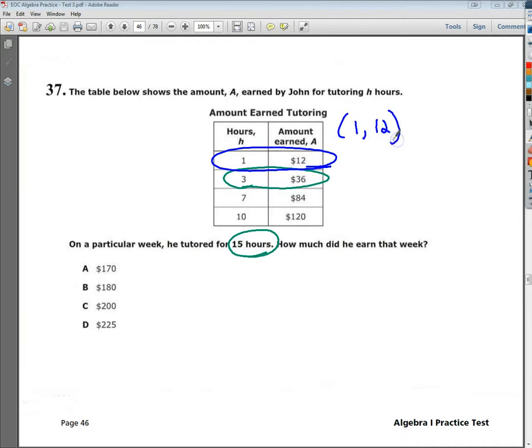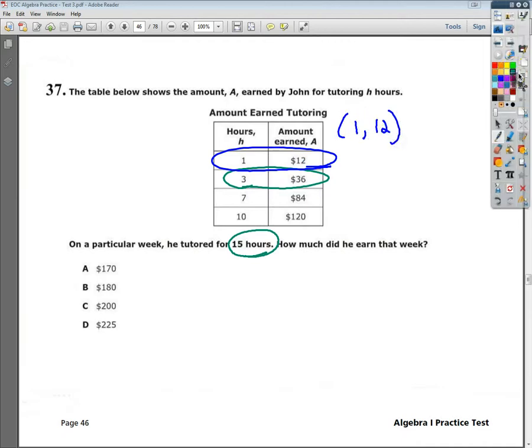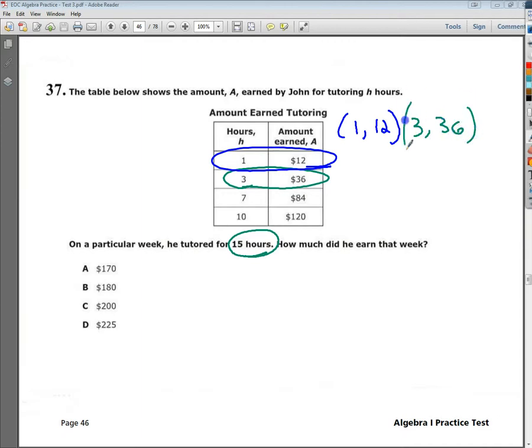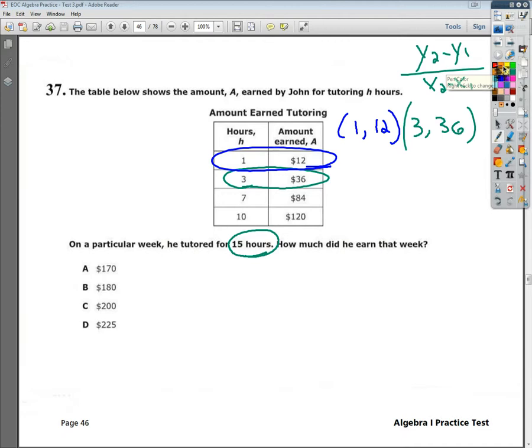If you had 1, 12, and then you had your other point of 3, 36, you can kind of figure out what your slope is. You know that formula that we all love so much, y2 minus y1 over x2 minus x1, which is pretty much, once you've written your ordered pairs out like this,